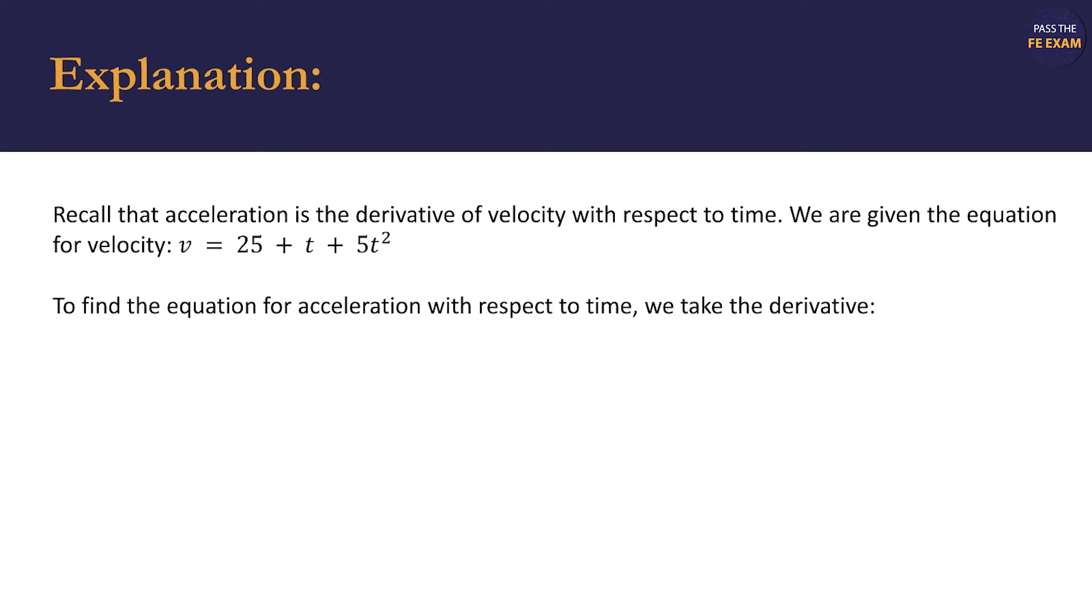We should take the derivative of the velocity equation. a equals dv over dt, or in other words, acceleration is equal to the derivative of the velocity equation with respect to time. We can substitute in the velocity equation for v, and when we take the derivative, we have acceleration equals 1 plus 10t.